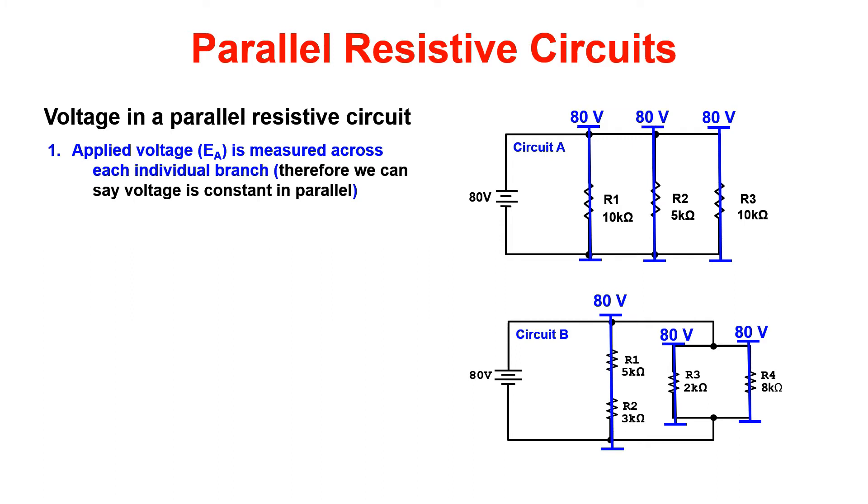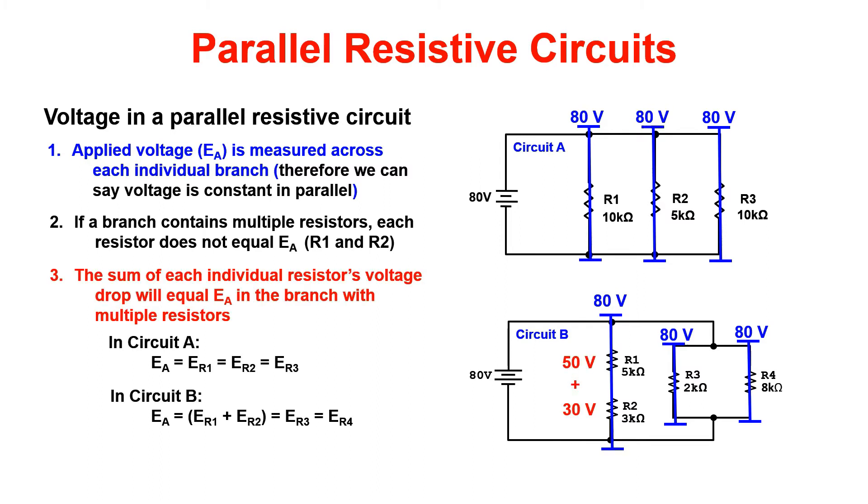Notice here in circuit B that we have two resistors in series with each other in branch 1. We're going to add resistors R1 and R2 in branch 1. Now the total resistance for branch 1 is 8K ohms of resistance. 80 volts divided by 8K ohms gives you a current of 10 milliamps. 10 milliamps times the individual resistance in branch 1 will give you the voltage drops of each resistor.